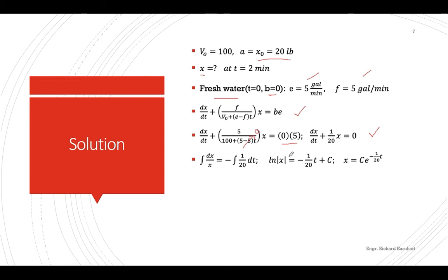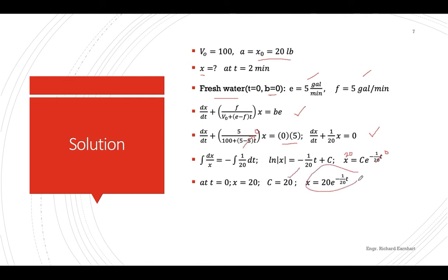Integrating, we get ln(x) equals negative 1/20 t plus C, so solving for x we get an exponential. At t equals 0, x equals 20, so substituting gives C equals 20. Therefore x as a function of time is x equals 20·e^(−t/20). When t equals 2, substituting gives the answer of 18.1 pounds.